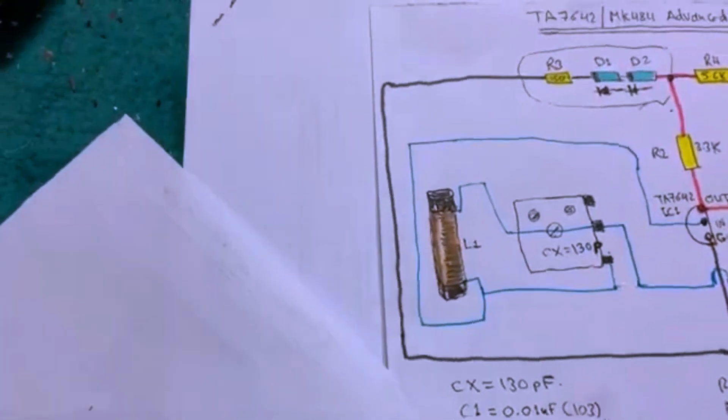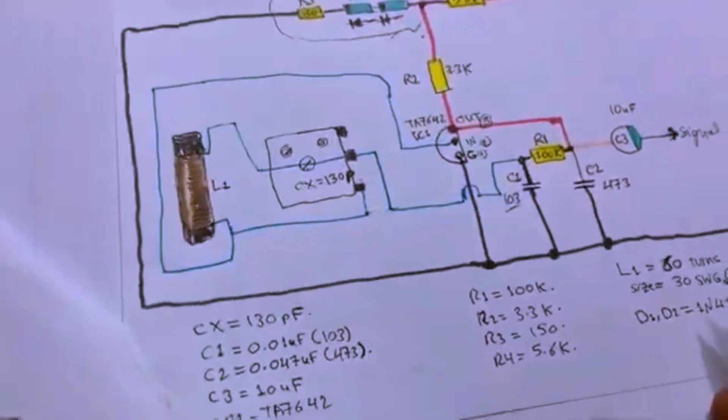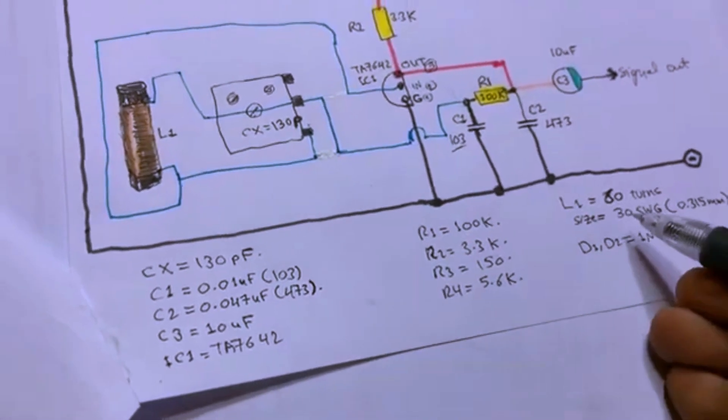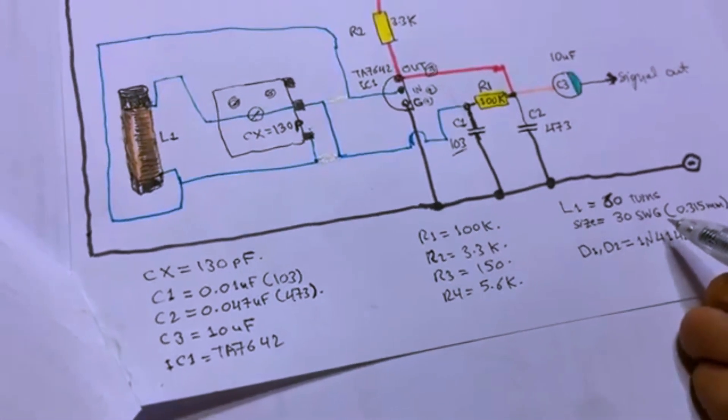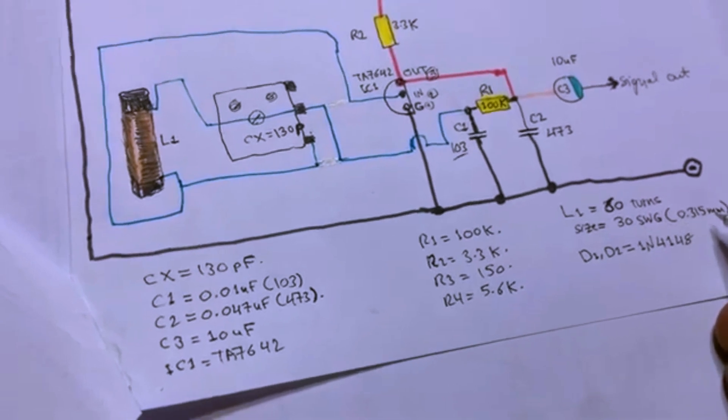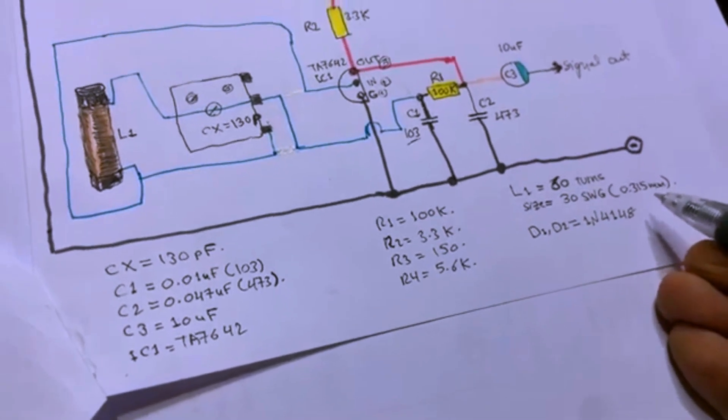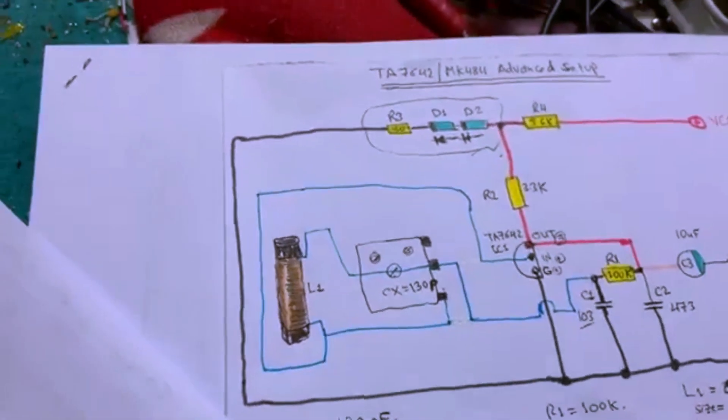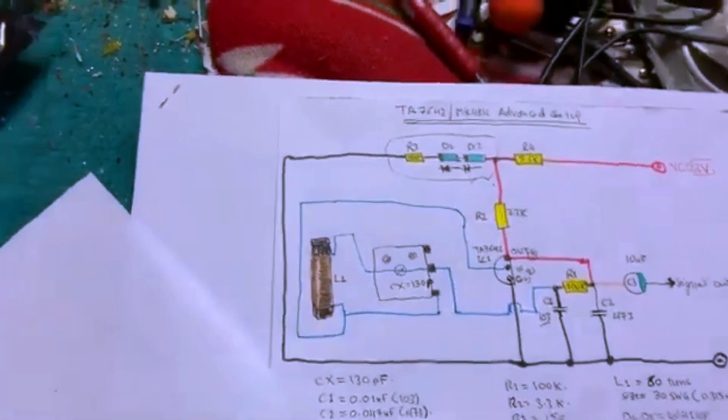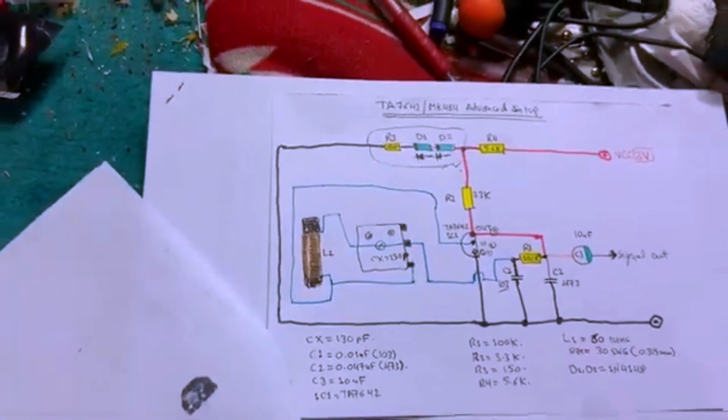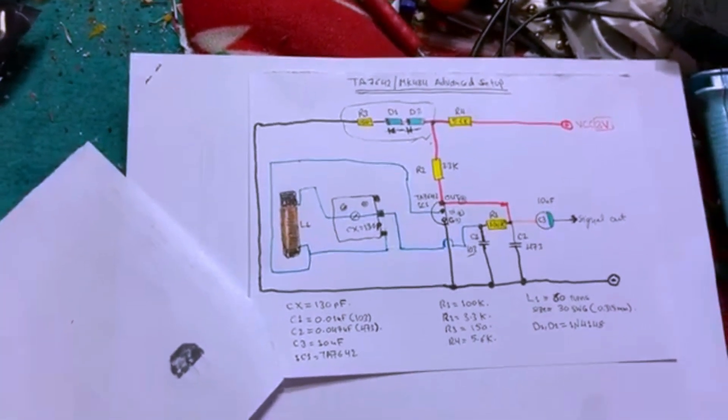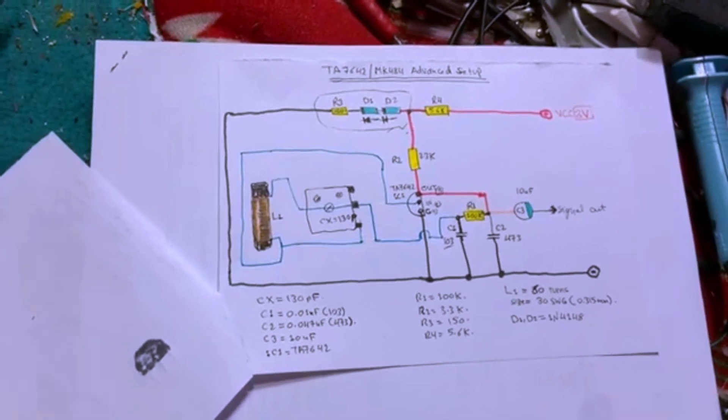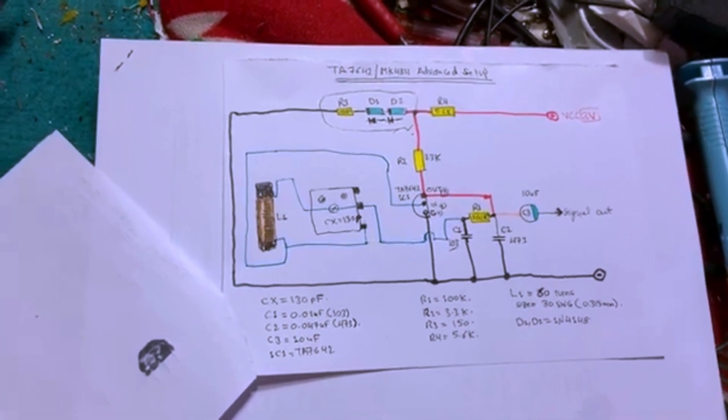It's better to use 100 turns but 60 turns is the minimum and it's enough. It's 30 standard wire gauge or 0.31 millimeters. You have two diodes, famous 1N4148 and that's it. You will get an AM effective beautiful circuit. I will leave it to the screen for some time so that you can print it out. Next we will go to the breadboard, we will build this project.